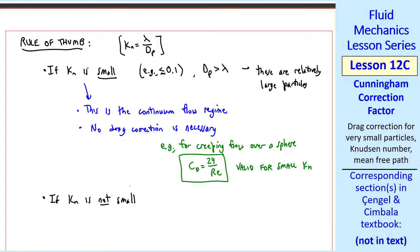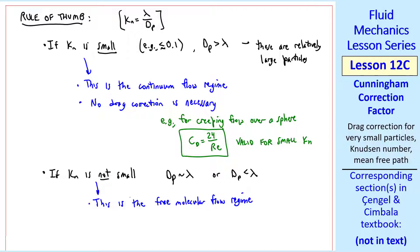If Kn is not small, in other words, when dp is approximately the same order of magnitude as lambda, or dp is smaller than lambda, then by definition Kn is not small. This is the free molecular flow regime, where free molecular effects are important, and a drag correction is necessary.